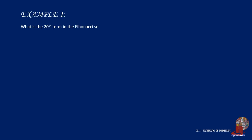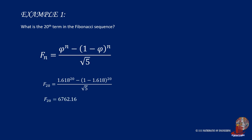We solved the same first example using Binet's formula this time. F sub 20 is equal to 1.618 raised to 20 minus the quantity of 1 minus 1.618 raised to 20 all over the root of 5, and computing the expression, we get 6762.16. From the iteration shown earlier, the exact value is 6765.